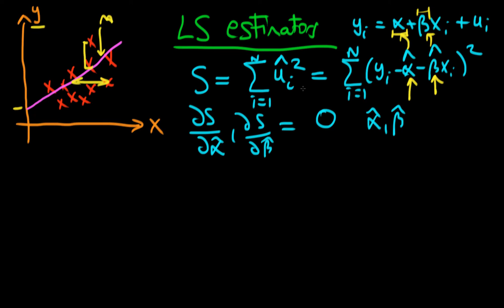That was how we approached things using the summation form of econometrics, specifically for the bivariate case. The problem with the summation form is that it doesn't generalize particularly well when thinking about the multivariate case — that's when we have more than one independent variable. So let's remind ourselves of what the matrix form of econometrics looks like.